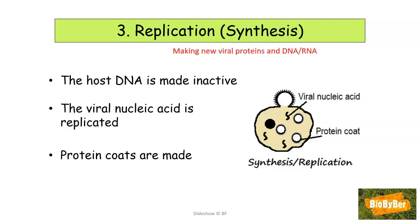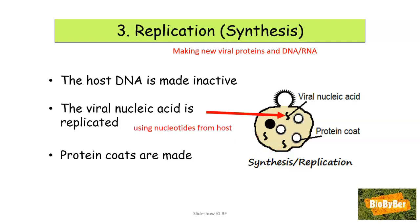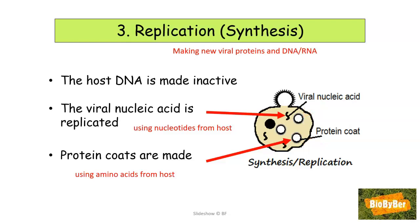Stage three involves replication, sometimes known as synthesis. This stage involves making new viral proteins and DNA or RNA. To carry out this process, the host DNA is made inactive. The viral nucleic acid is then replicated or copied using the nucleotides from the host cell. Protein coats are also made using the ribosomes and the amino acids of the host.